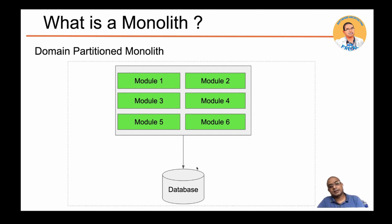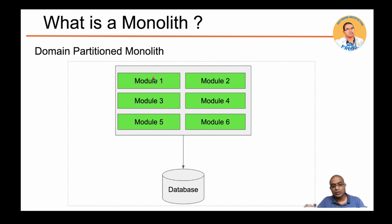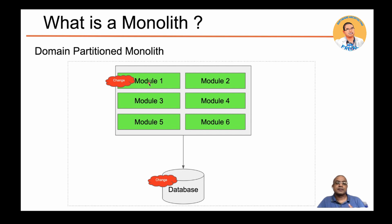The other type is the domain partition monolith. Instead of layers, you have modules — for example, an invoice module, order module, or billing module. Inside each module you have everything: data access logic, business logic, and UI components. One advantage is that a change may only affect one module. One disadvantage is that common functionality like security, exception handling, and logging must be shared across all modules via shared components or shared DLLs.